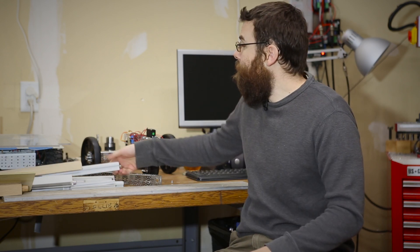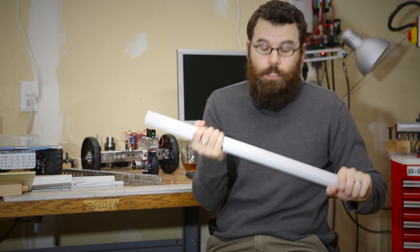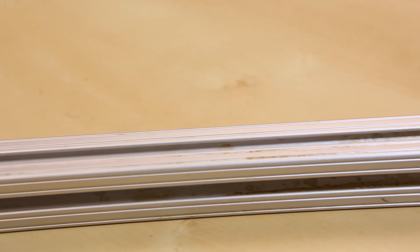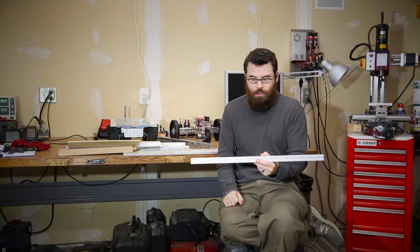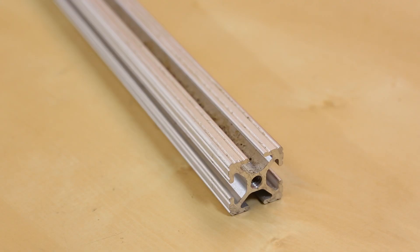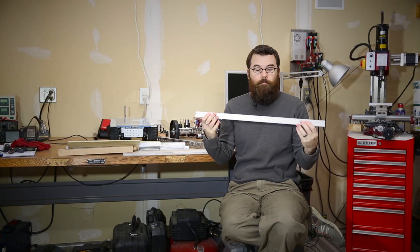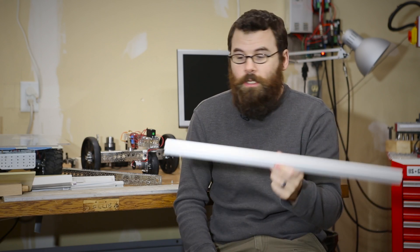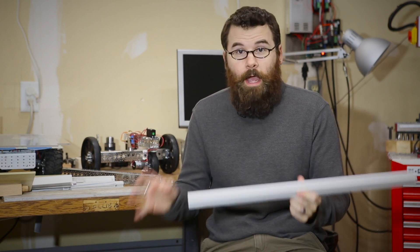One of the most popular is actually 8020. 8020 is an aluminum extrusion and this is just an example of one of their extrusions. They have many different sizes, many different shapes. They have these channels that you can slide a nut inside, attach something to it, screw it down, and form a very basic structure.